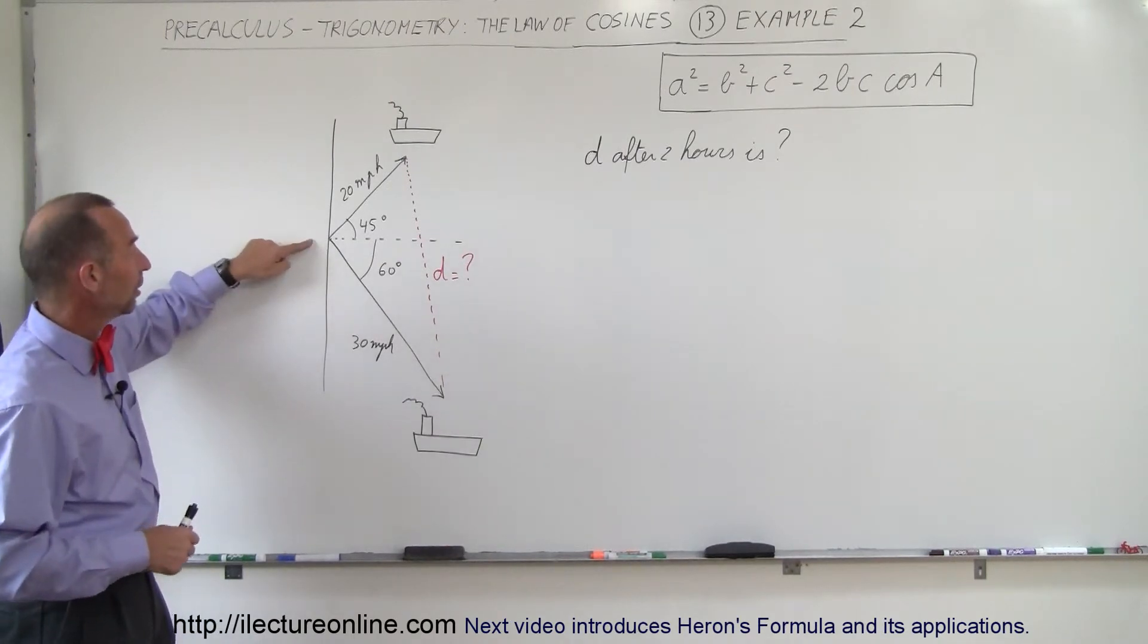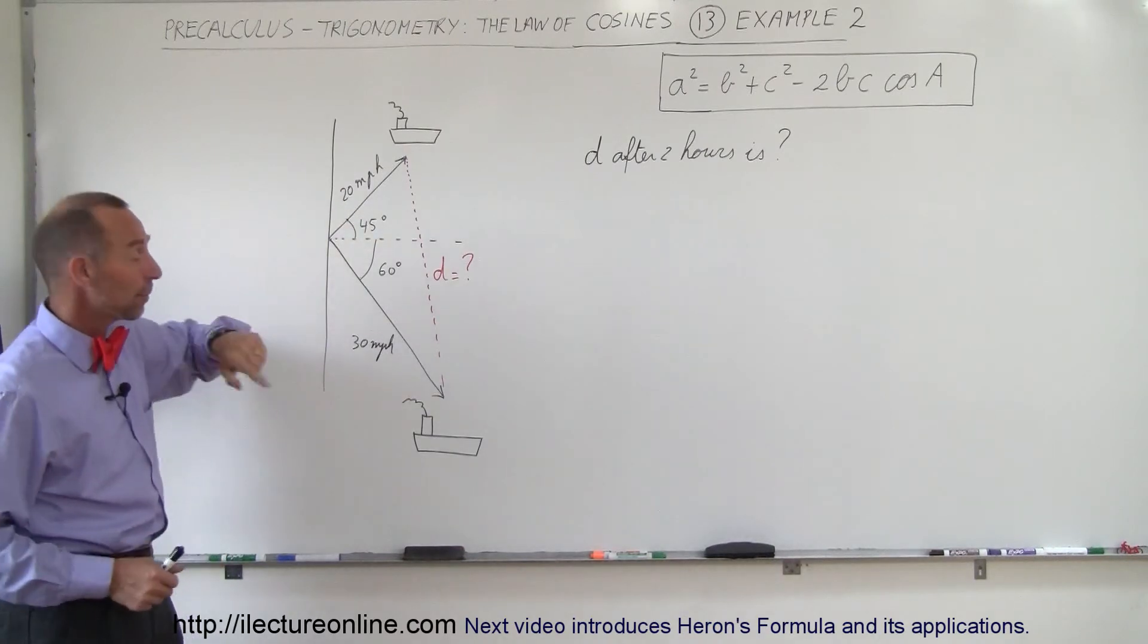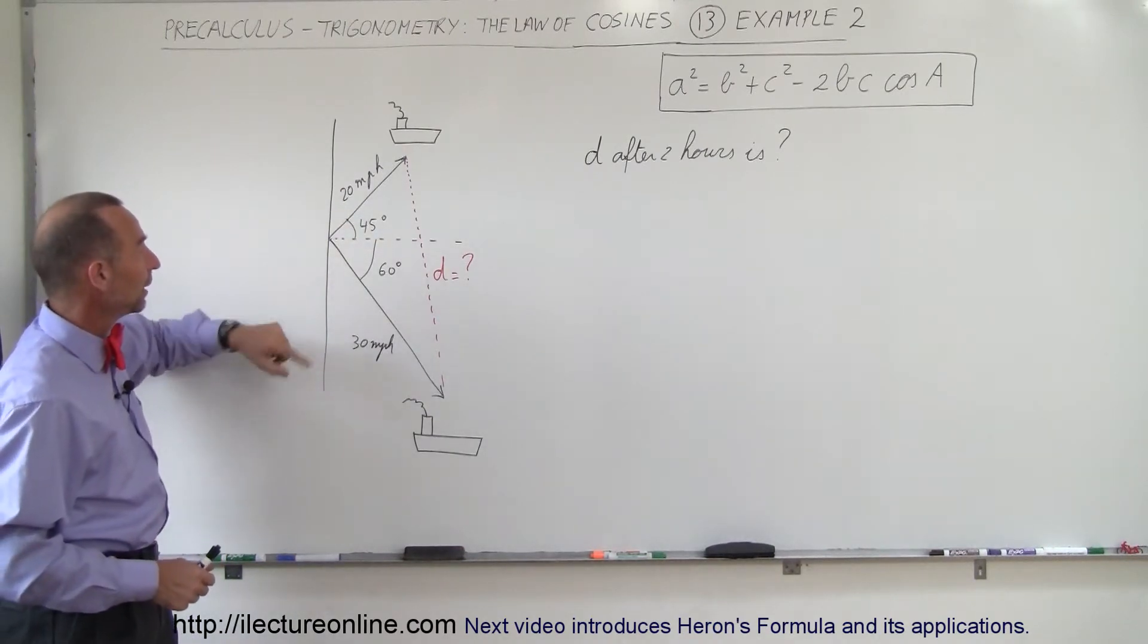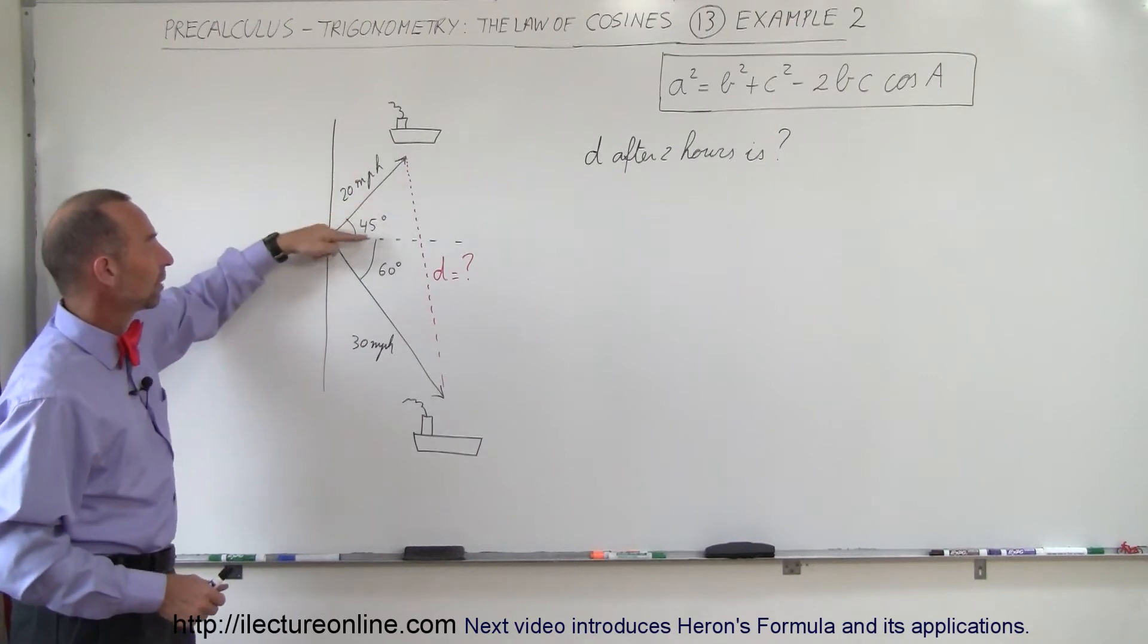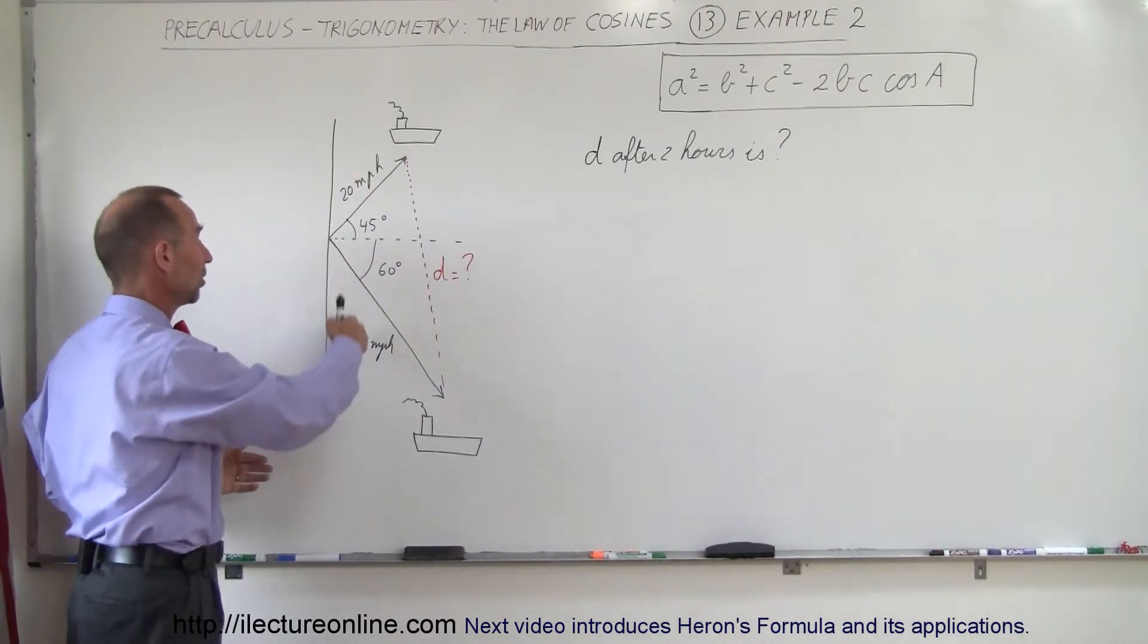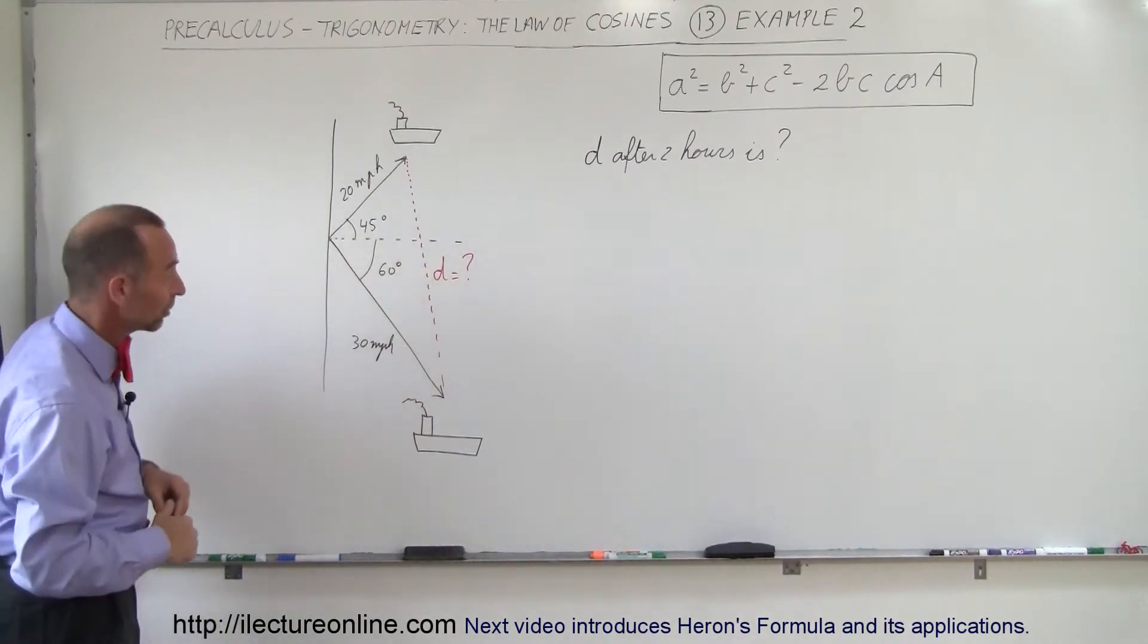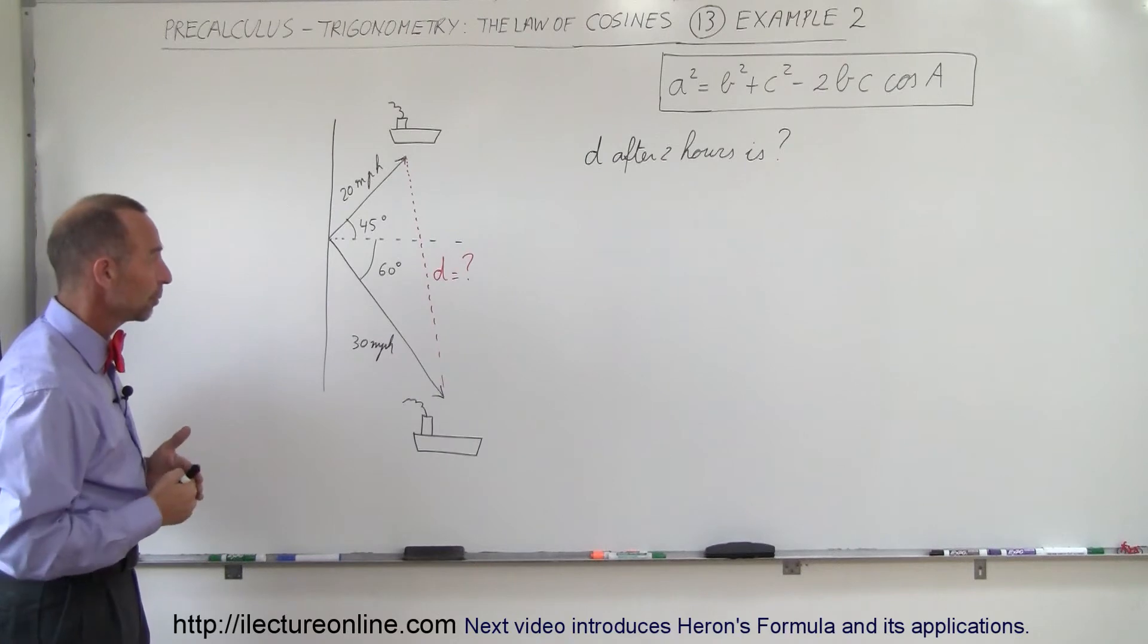So let's say we have a harbor. Two ships leave the harbor at the same time, one moving at 20 miles per hour, the other one moving at 30 miles per hour. This one moving at an angle of 45 degrees relative to the perpendicular to the beach or to the harbor, and the other one at a 60 degree angle in the opposite direction relative to the perpendicular to the beach.